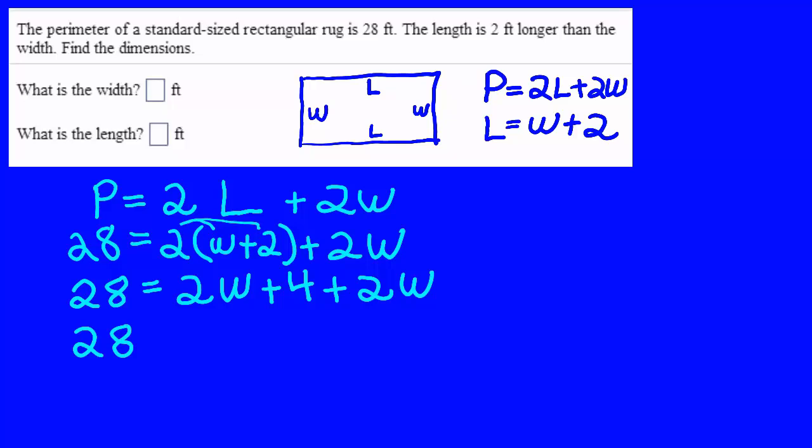So we'll have 28 equals 4W because I'm going to add the 2W and the 2W together, and bring down the plus 4.